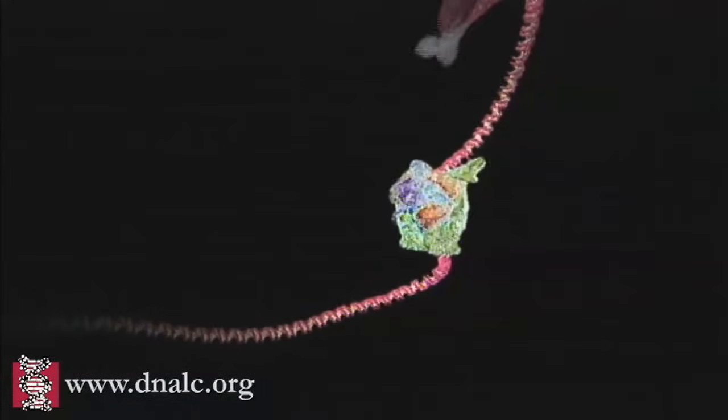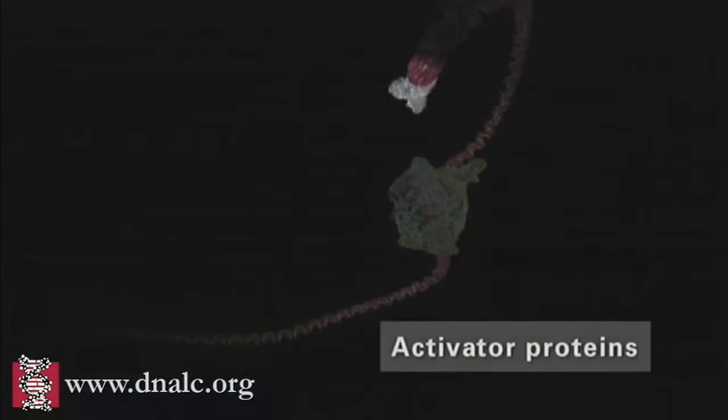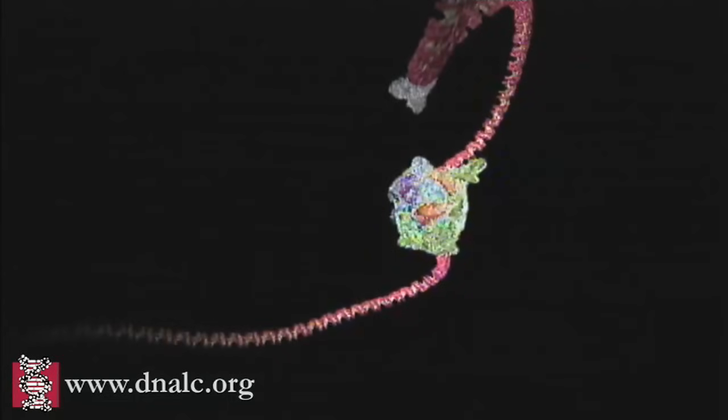The initiation complex requires contact with activator proteins, which bind to specific sequences of DNA known as enhancer regions. These regions may be thousands of base pairs distant from the start of the gene.